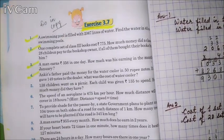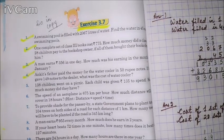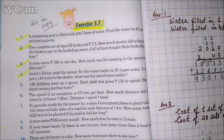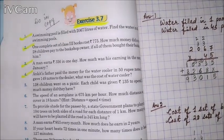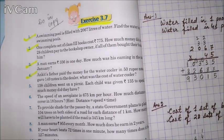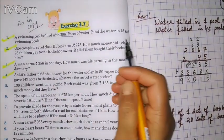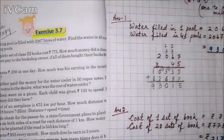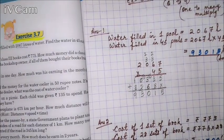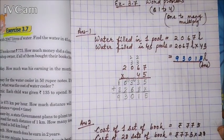Question number one: a swimming pool is filled with 2067 liters of water. Find the water in 45 such swimming pools. In one swimming pool there are 2067 liters of water. We have to find how much water is there in 45 such swimming pools. So we have to multiply the water filled in one pool by 45 to get the water filled in 45 pools.